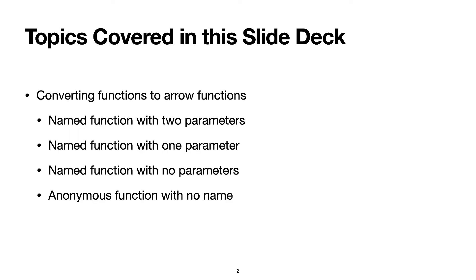Topics covered in this slide deck are going to be converting functions to arrow functions. The first thing we're going to look at is a named function — that's a function with a name that has two parameters. Then we'll look at a function with one parameter, a function with no parameters, and an anonymous function with no name. You've seen anonymous functions inside event listeners, set intervals, and stuff like that.